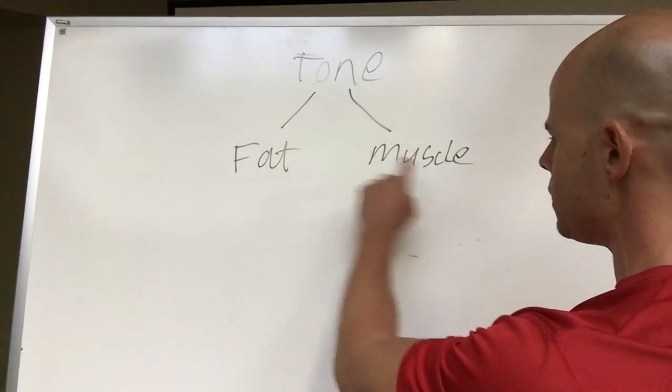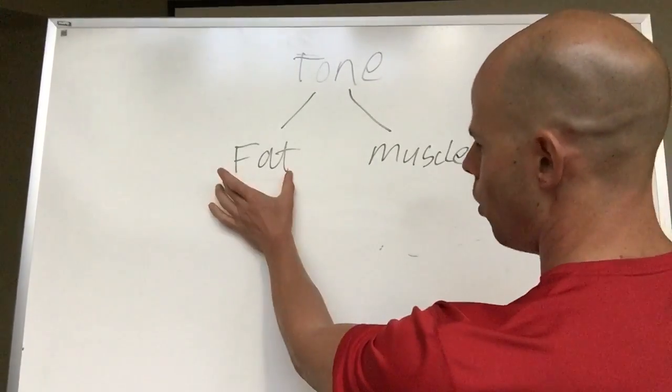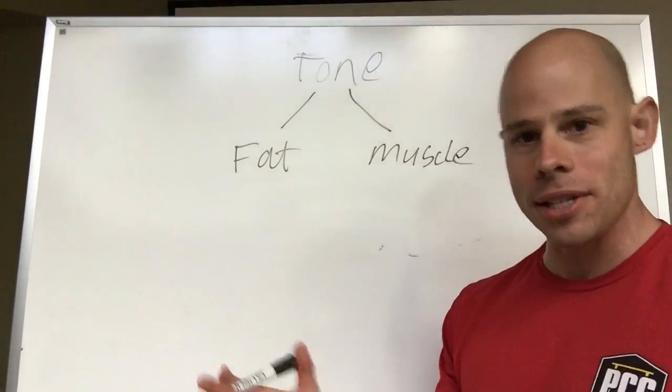When you have less of this and more of that, you have more muscle tone. When you've got more of that and less of this, you have less muscle tone. It's that simple.